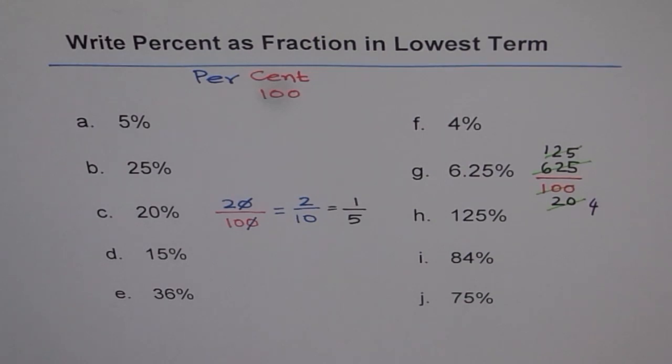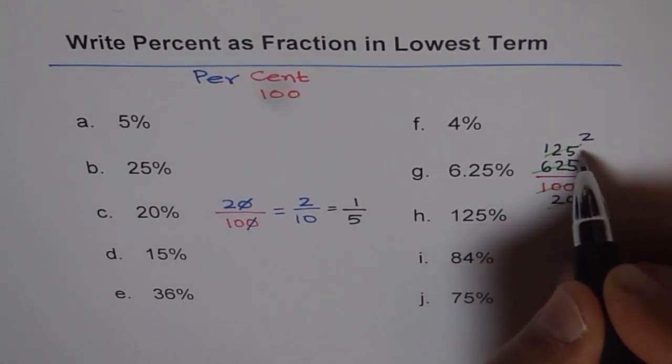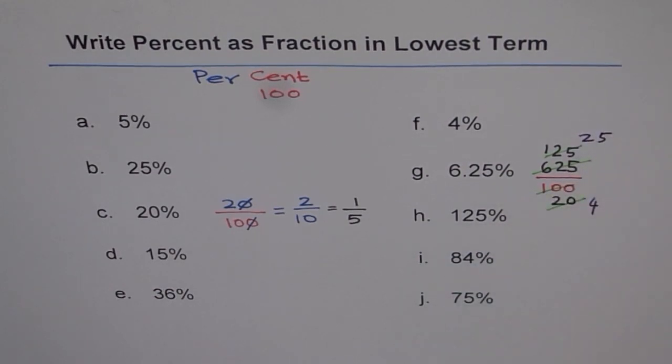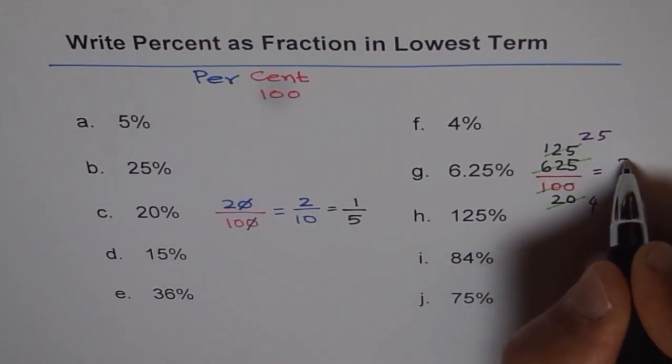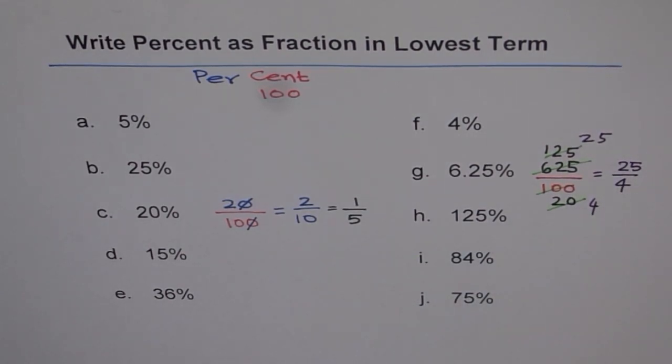So 5 times 2 is 10 and 5 times 5 is 25. So you get 25 over 4. So that is our answer. 25 over 4. That is the lowest term in which you can write.